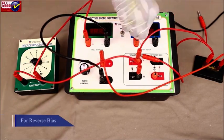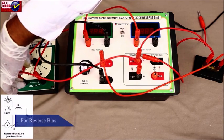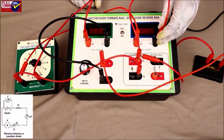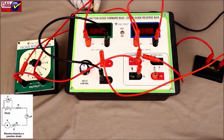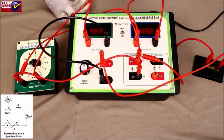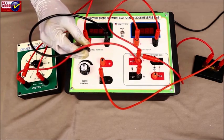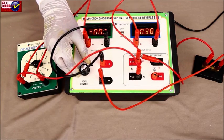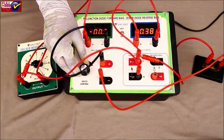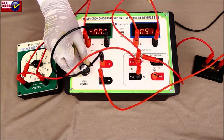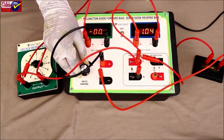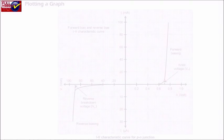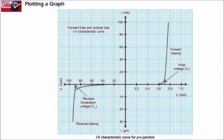For reverse bias, make connections as shown in the circuit diagram for reverse biasing. Reverse the battery setup so that the P side gets connected to the negative terminal and the N side gets connected to the positive terminal of the battery. Increase the applied voltage in small incremental steps and record corresponding values of current. Plot the graph for reverse voltage and reverse current.